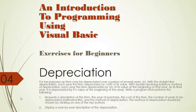For tax purposes an item may be depreciated over a period of several years, or n years. With the straight line depreciation, each year the item depreciates by 1/n of its value. With the double declining balance method, each year the item depreciates by 2/n of its value at the beginning of the year. In its final year it is depreciated by its value at the beginning of the year.